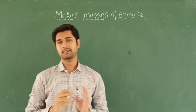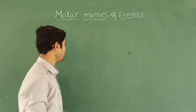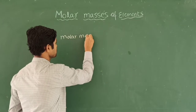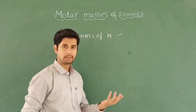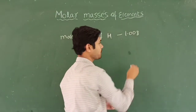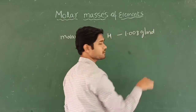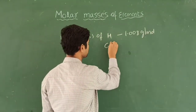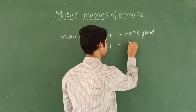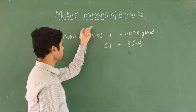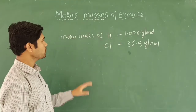The molar mass of an atom of an element is given by its atomic mass. For example, the molar mass of a hydrogen atom is the same as its atomic mass, which is 1.008 gram per mole. Similarly, the atomic mass of chlorine is 35.5, so its molar mass is 35.5 gram per mole. This is simply the atomic mass of the element.